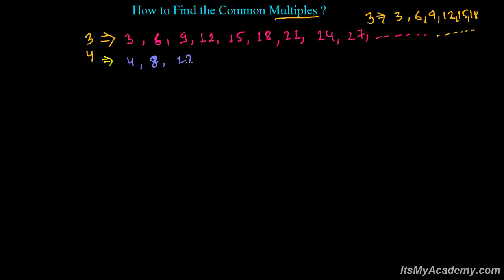Four, eight, twelve — twelve can be divided by four — and similarly sixteen, similarly twenty, twenty-four, twenty-eight, and so on. So now I need to find out the common multiples. Common means mutual — in the multiples of three also and in the multiples of four also. So check out those numbers which appear in both lists.